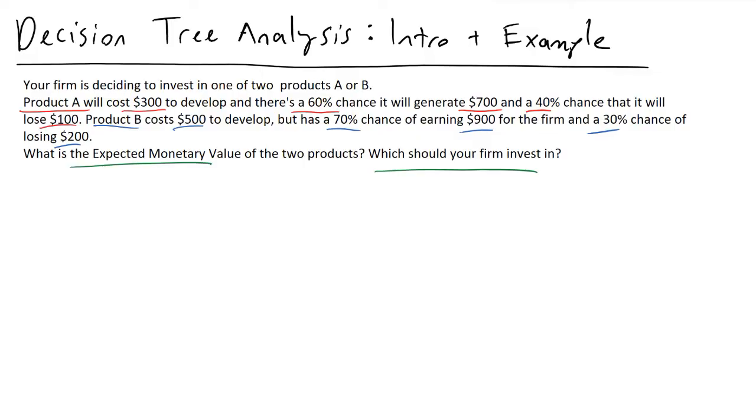If you look at the surface of this, you might think clearly we can make 900 bucks if we go with product B. That looks a lot better than only making 700 bucks with product A. Should we really go with product A?